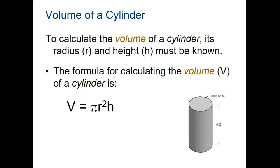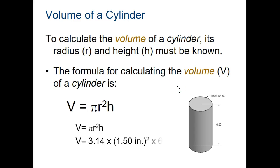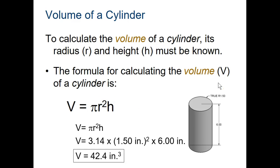A cylinder is a little more challenging. You have to take into consideration — it makes sense. Look at it. You have a circle, and that's pi r squared, which gives you that area times the height. So it's the same as length times width times height, except in this case we have a circle. So we have to find the area of the circle times the height. You need to know how to use this formula to find volume, or radius, or height. Here's your example that gets you 42.4 cubic inches.